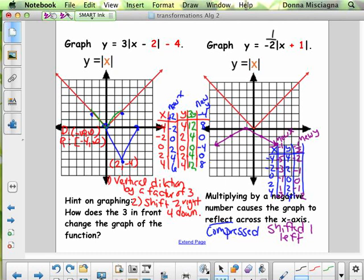Now you can see that the graph is reflected. It is vertically compressed, so it's wider. And it's shifted 1 to the left.